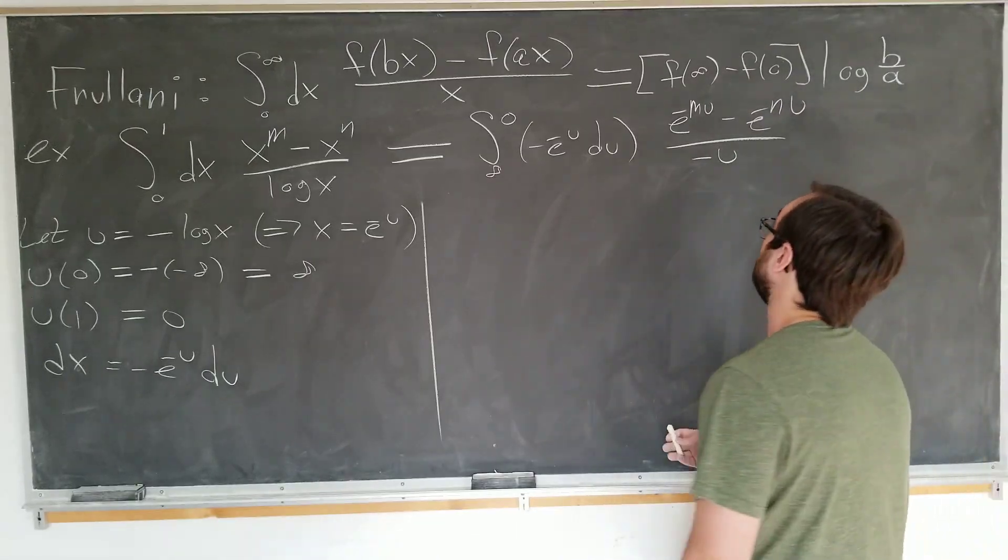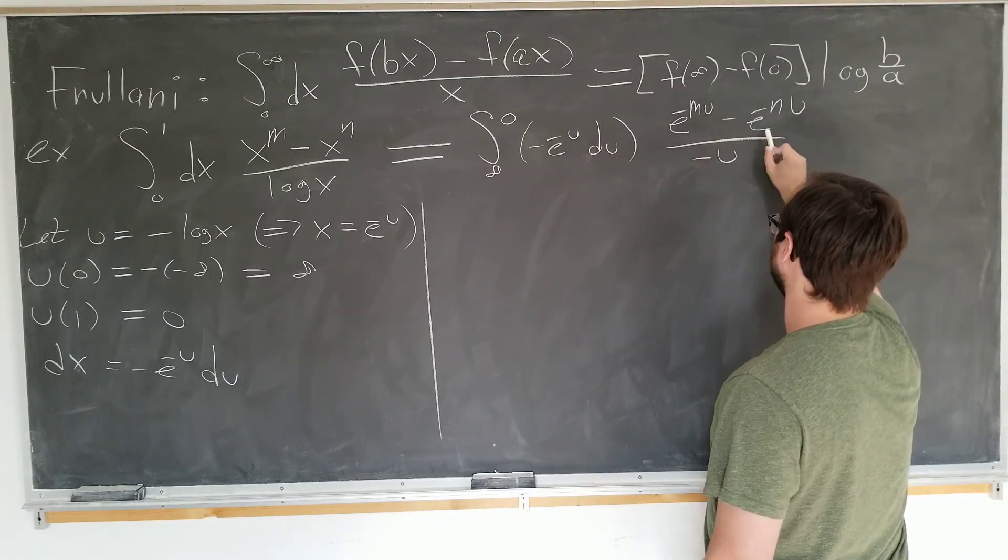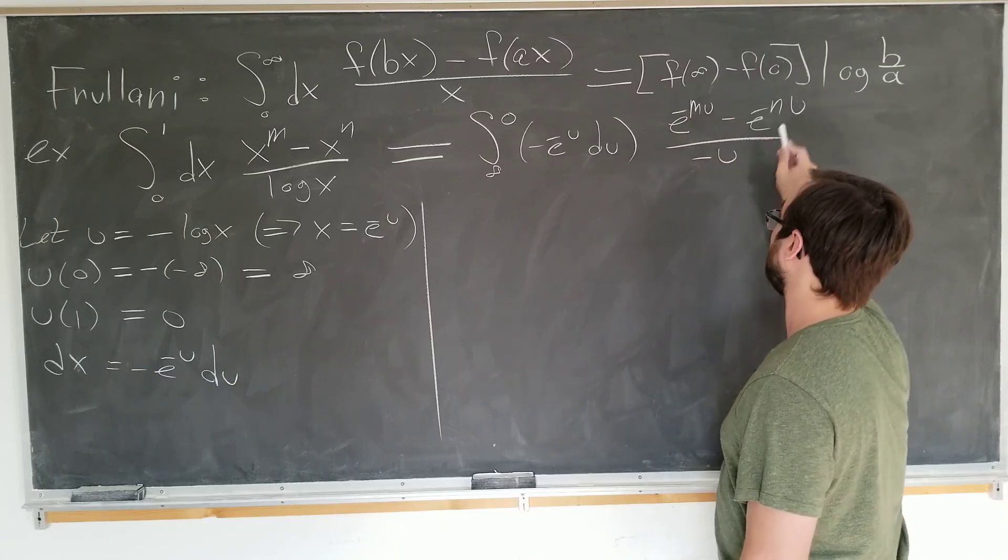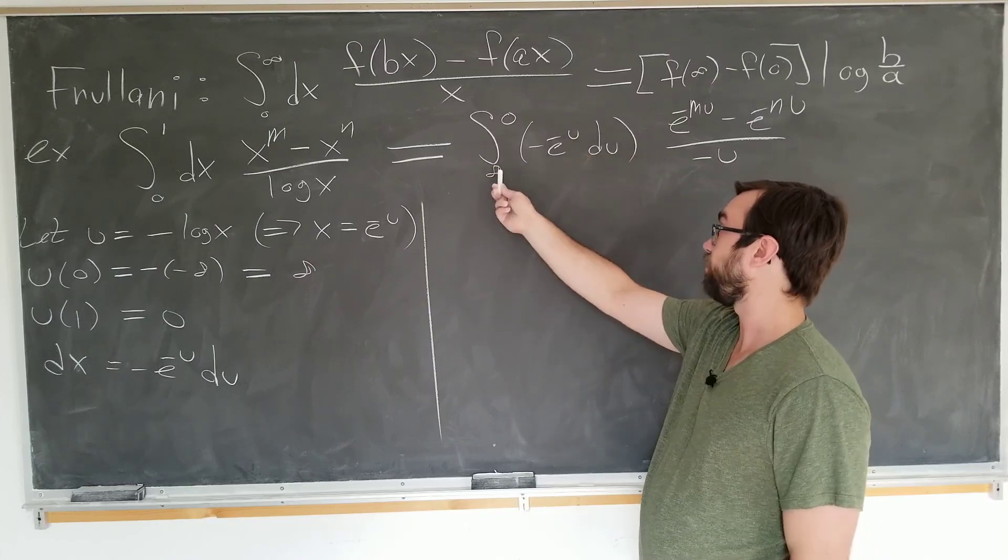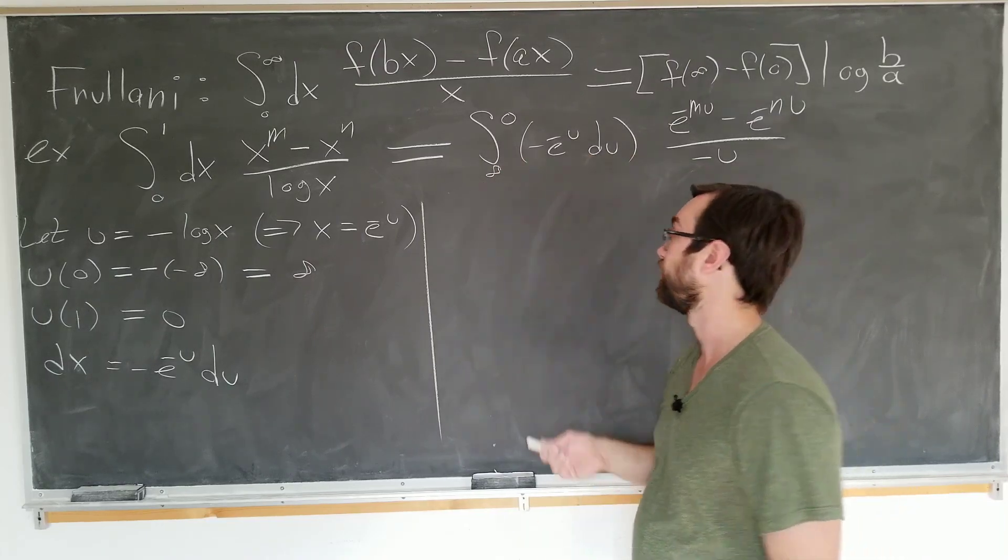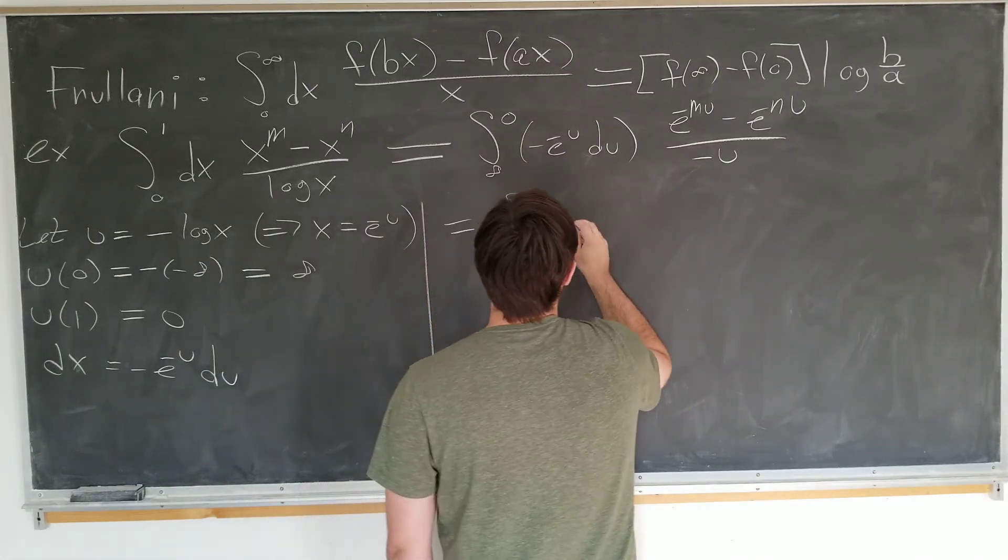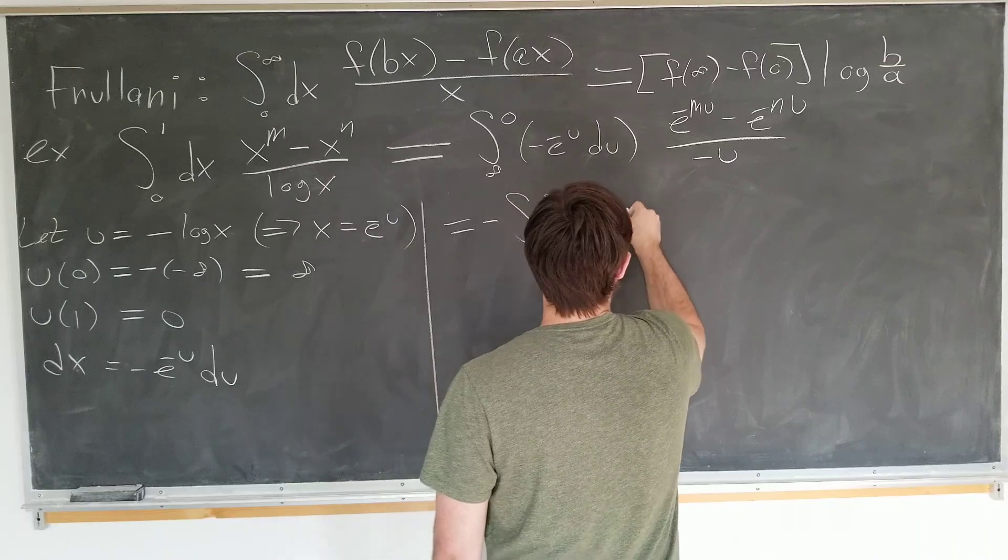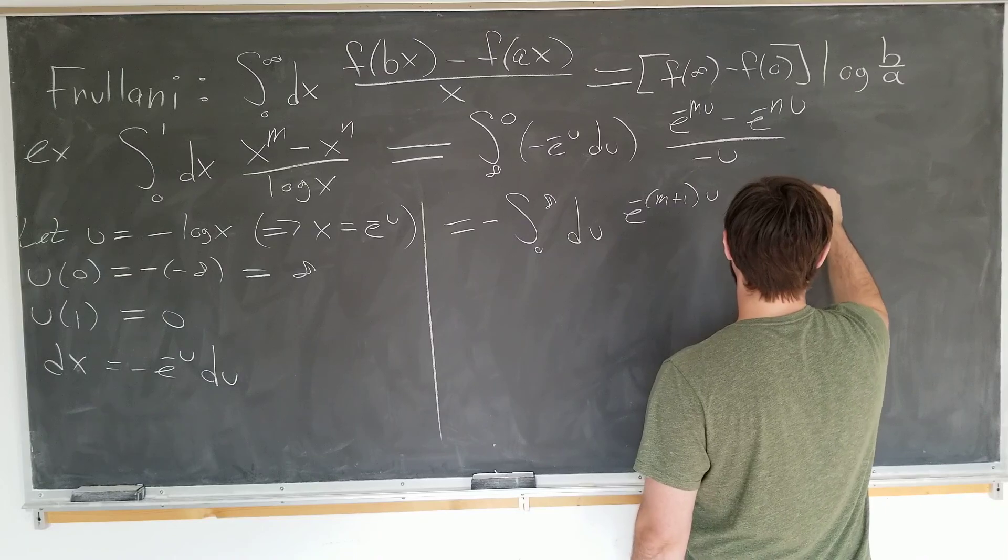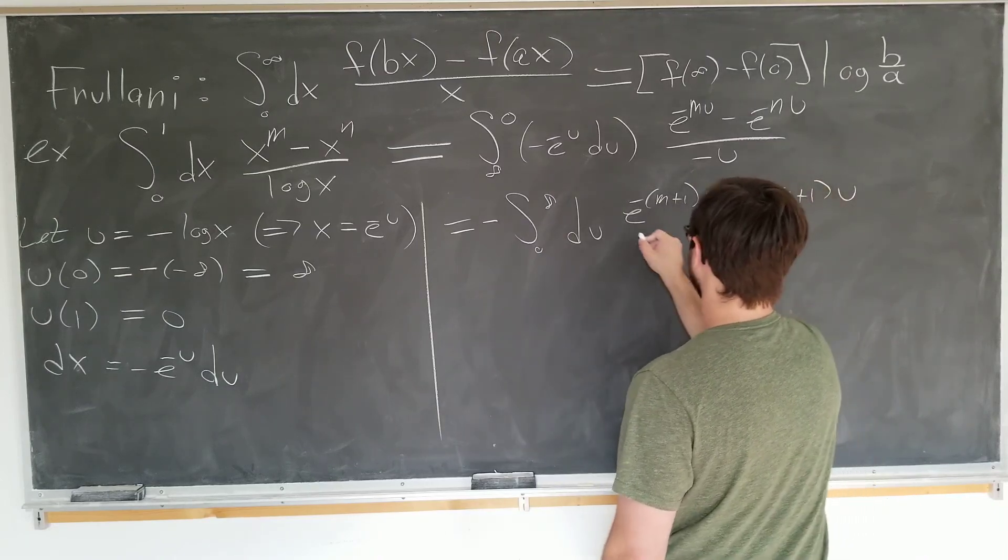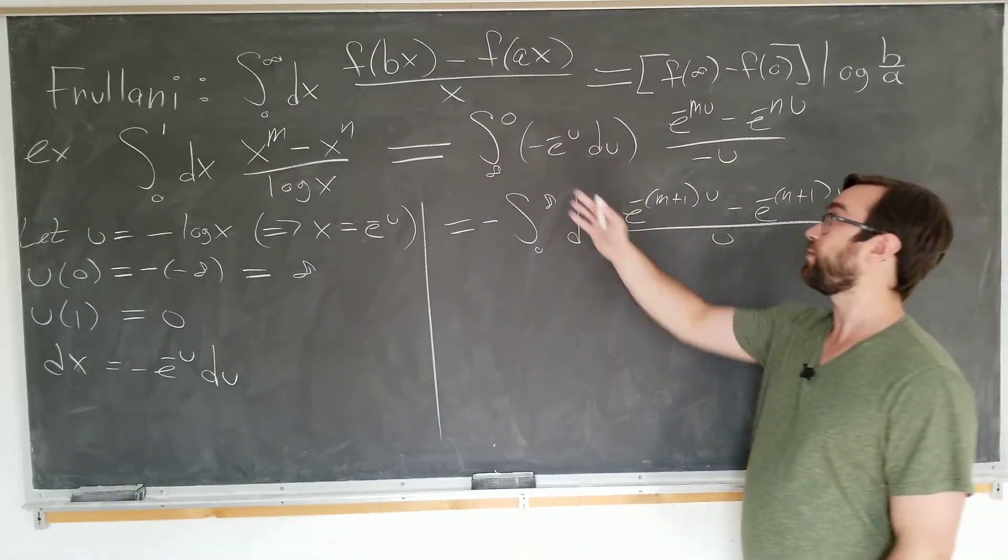Okay. Let's simplify a few things. We see that the e to the minus u's will combine in the numerator to increase m and n by one. And we also see that these minus signs will cancel out. So if we want an integral from 0 to infinity, we have du, e to the minus m plus one u minus e to the minus n plus one u over u. And now finally, this is precisely a form that we can evaluate using our Frulani theorem.